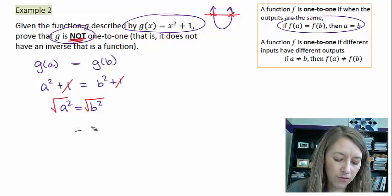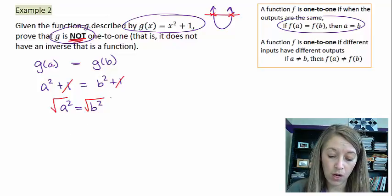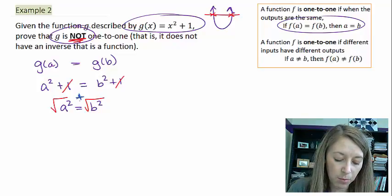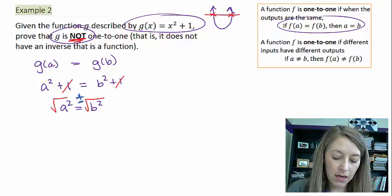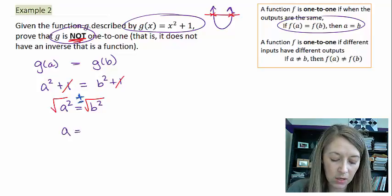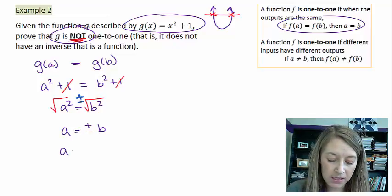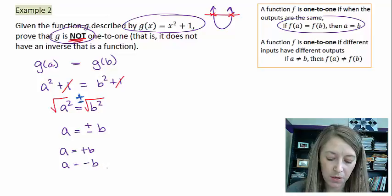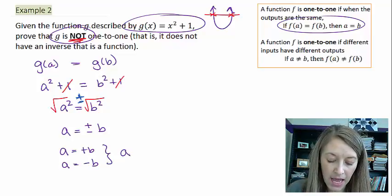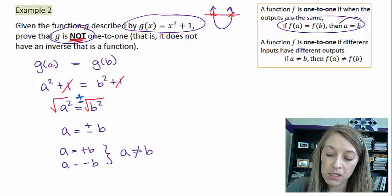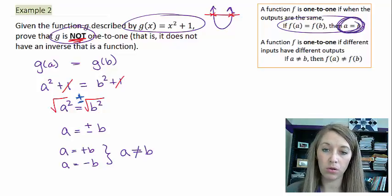Well, if you ever force in a square root like you did here, then you must also force in a plus or minus. So, we actually have that a is equal to either a positive or a negative b. And therefore, if a is equal to positive b and a could also be equal to negative b, that tells us that a is not necessarily equal to b. So, this part doesn't hold true.